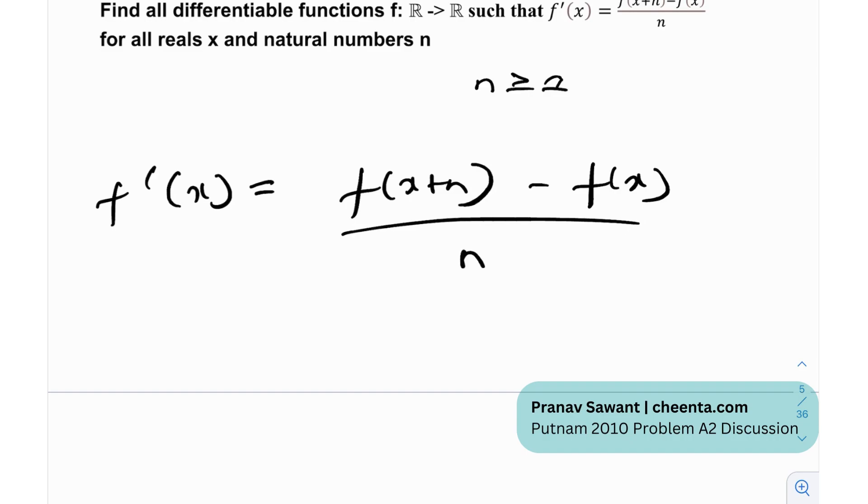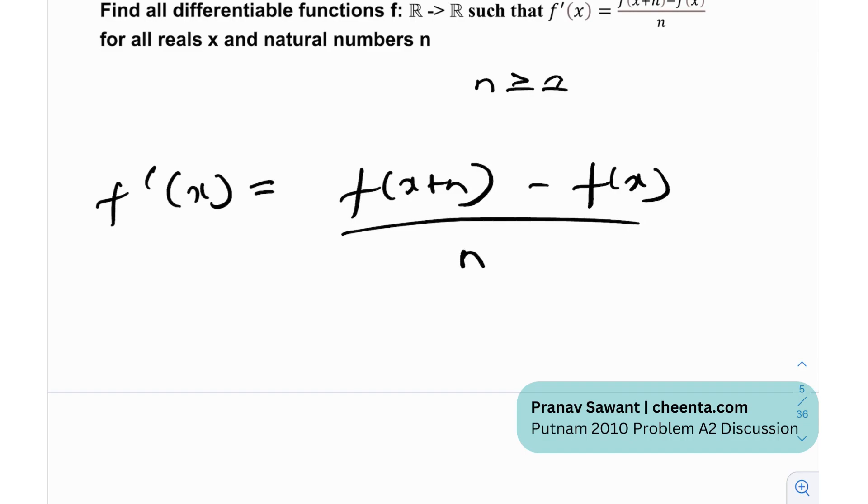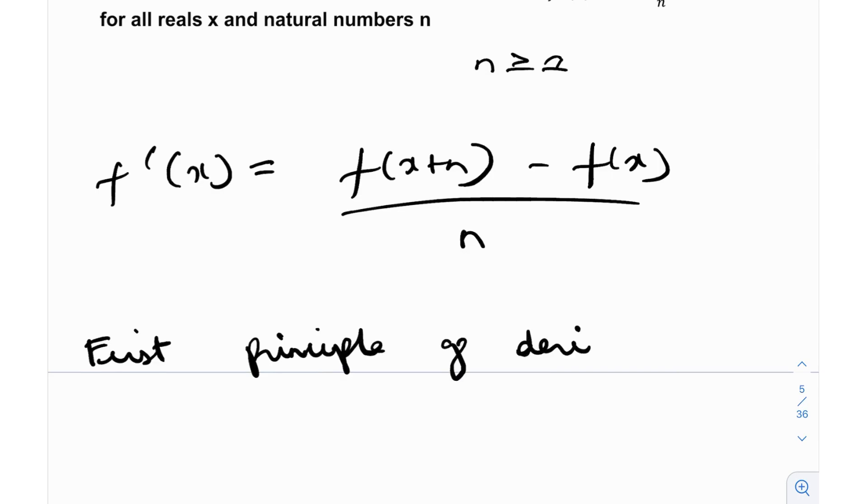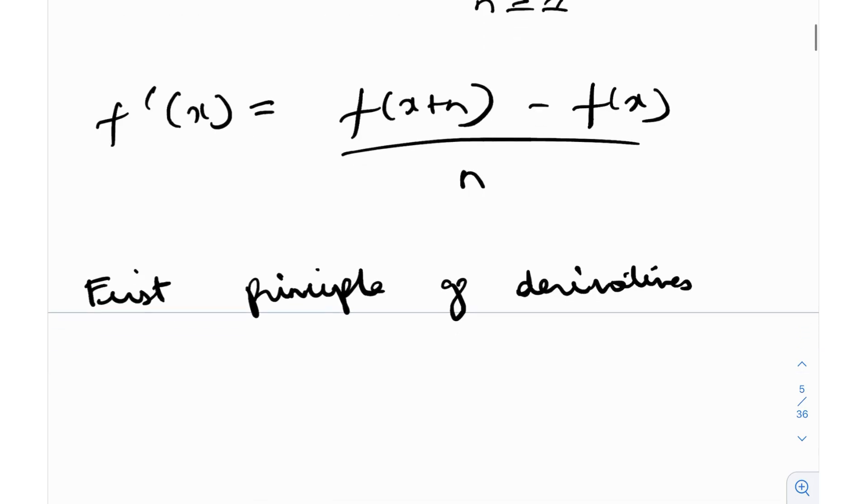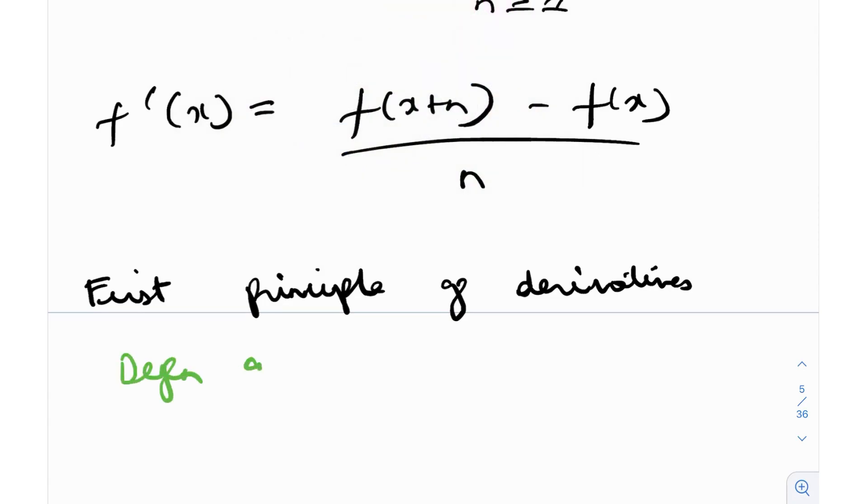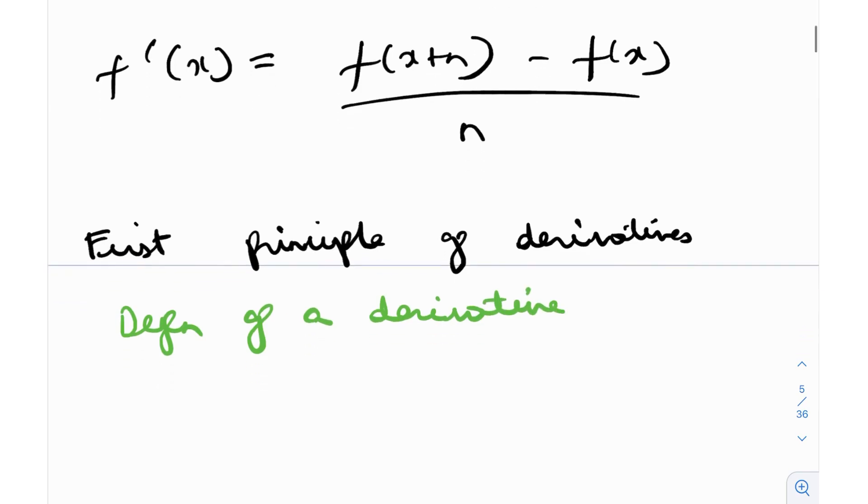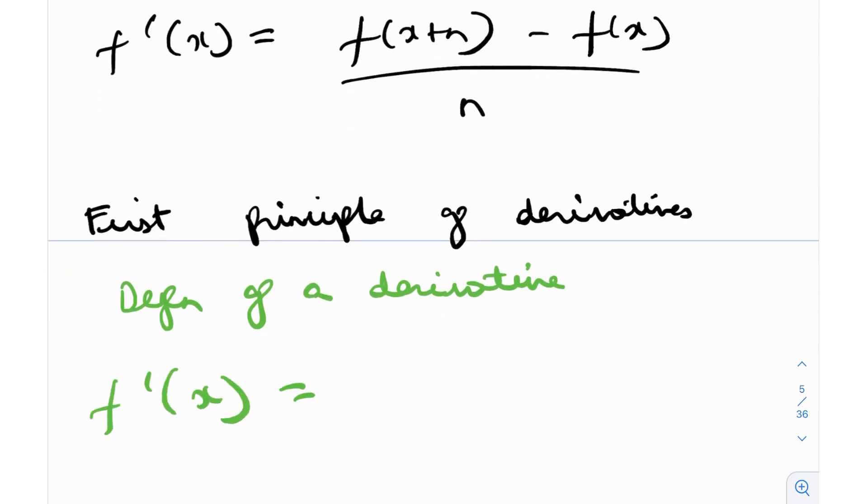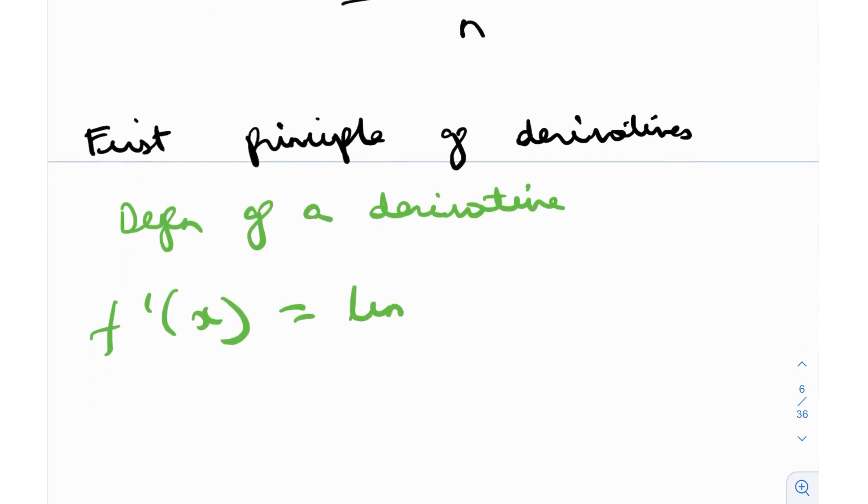Now this is actually very very similar to something that I've seen before and that is actually called the first principle of derivatives. It is the definition of a derivative, the rate of change of something which we learn in calculus. It just states that the derivative of any function f is nothing but the limit as h tends to 0 of f(x+h) minus f(x) divided by h.